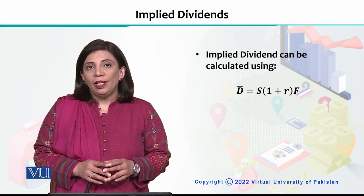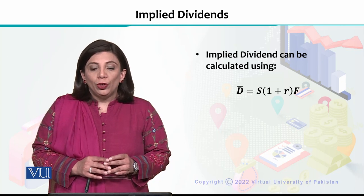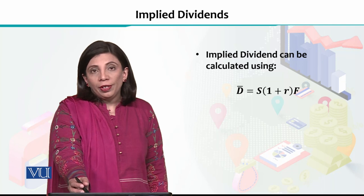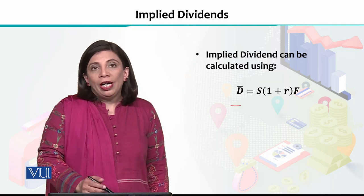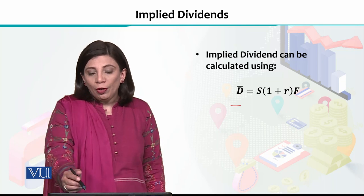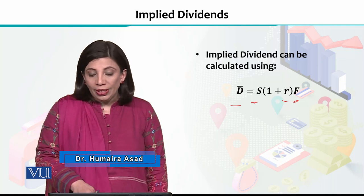In this section, I will explain how the implied dividends can be calculated. We can use this formula to calculate the value of the implied dividend, and that is symbolized by a capital D with a bar at the top of it. You are given spot price, your expected rate of return, and then we have the forward price.